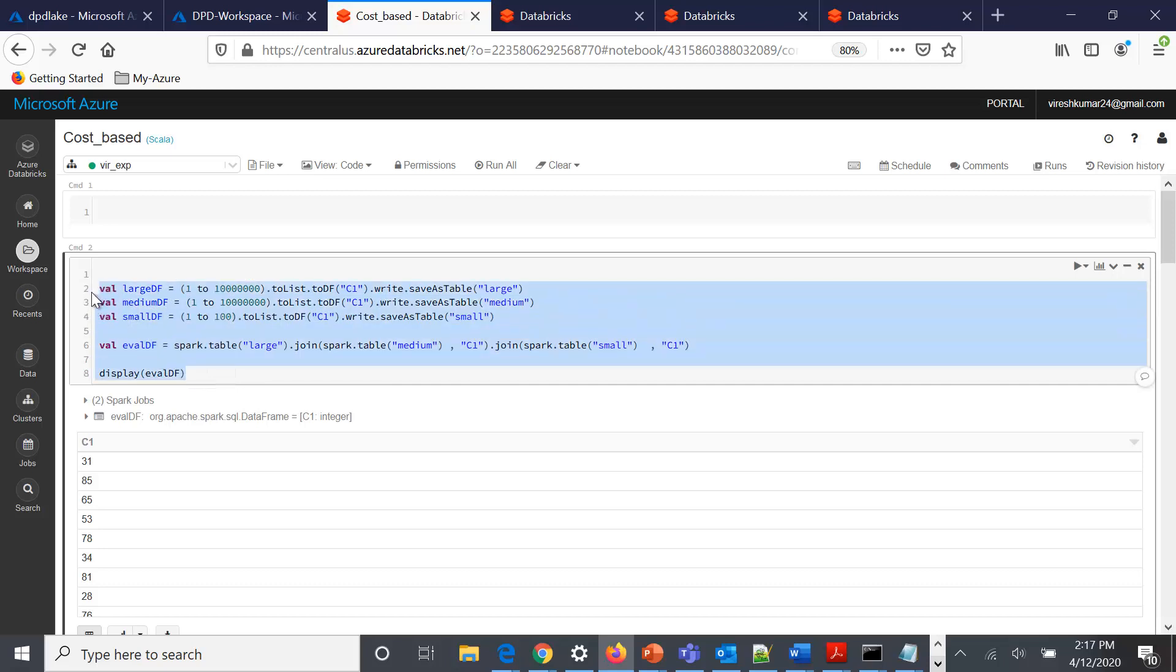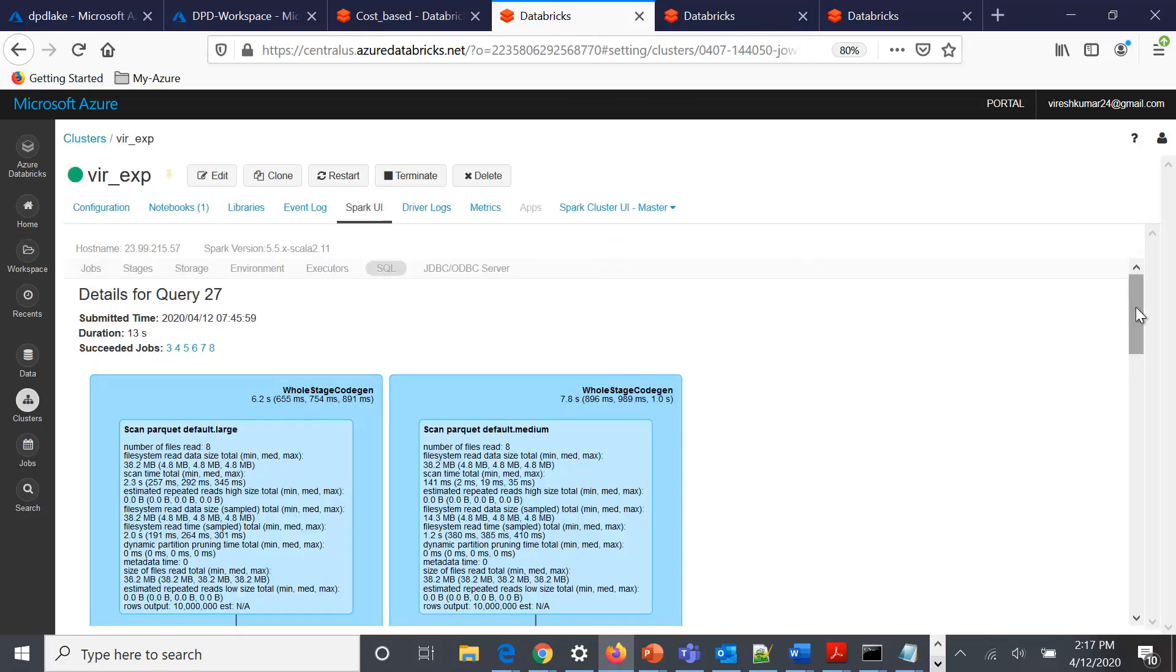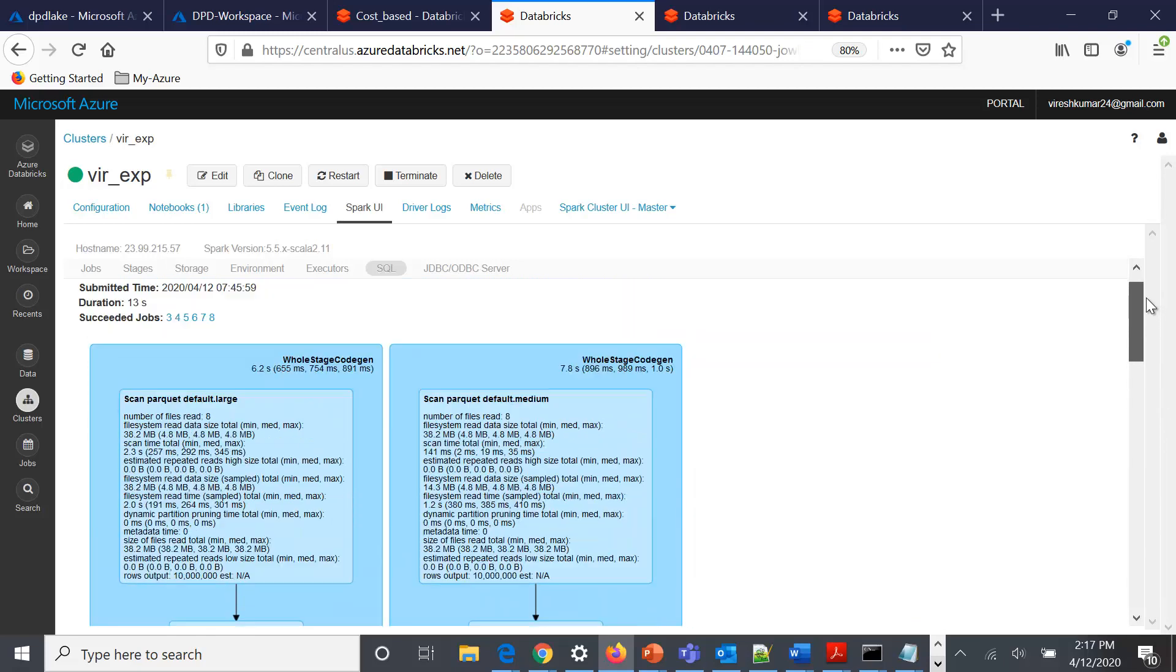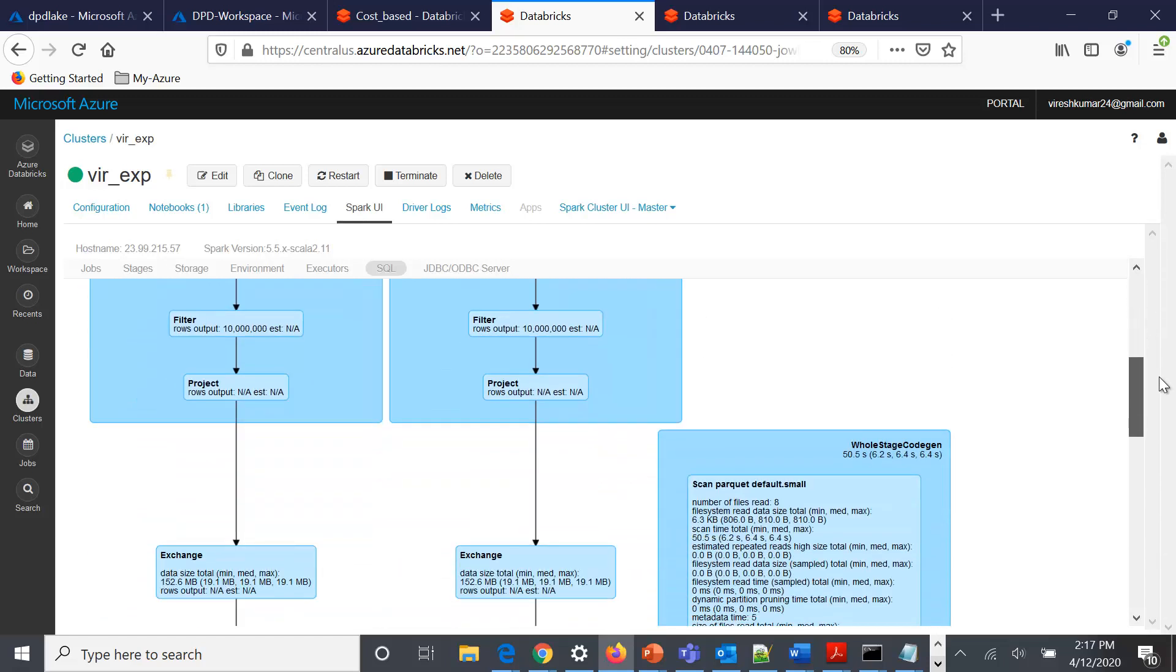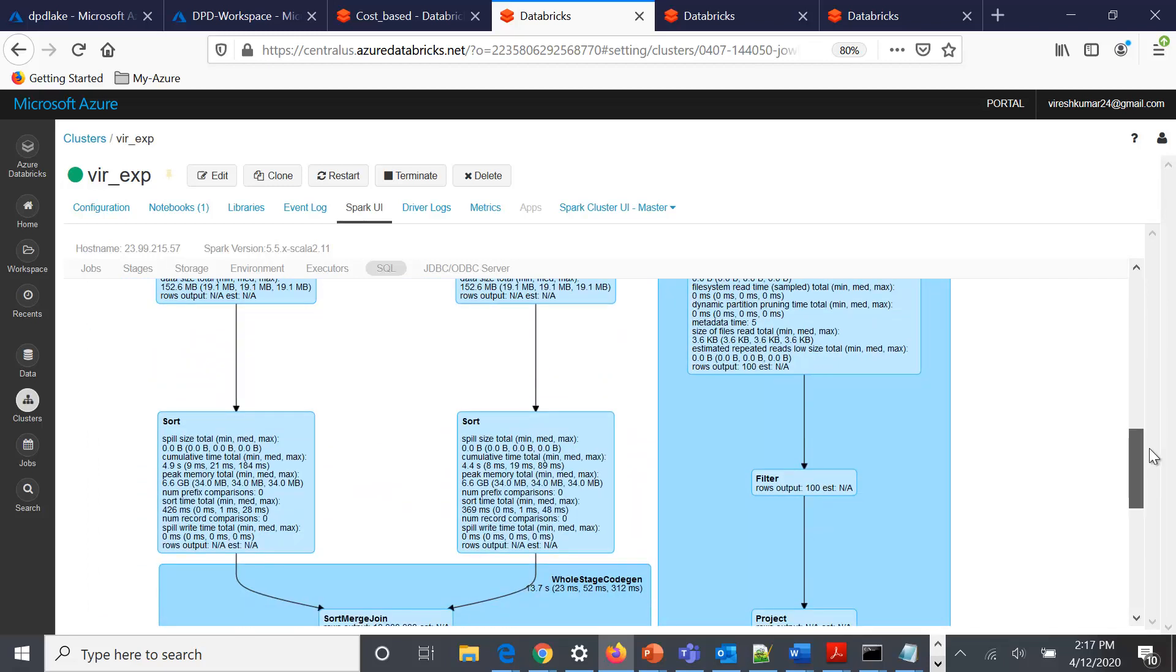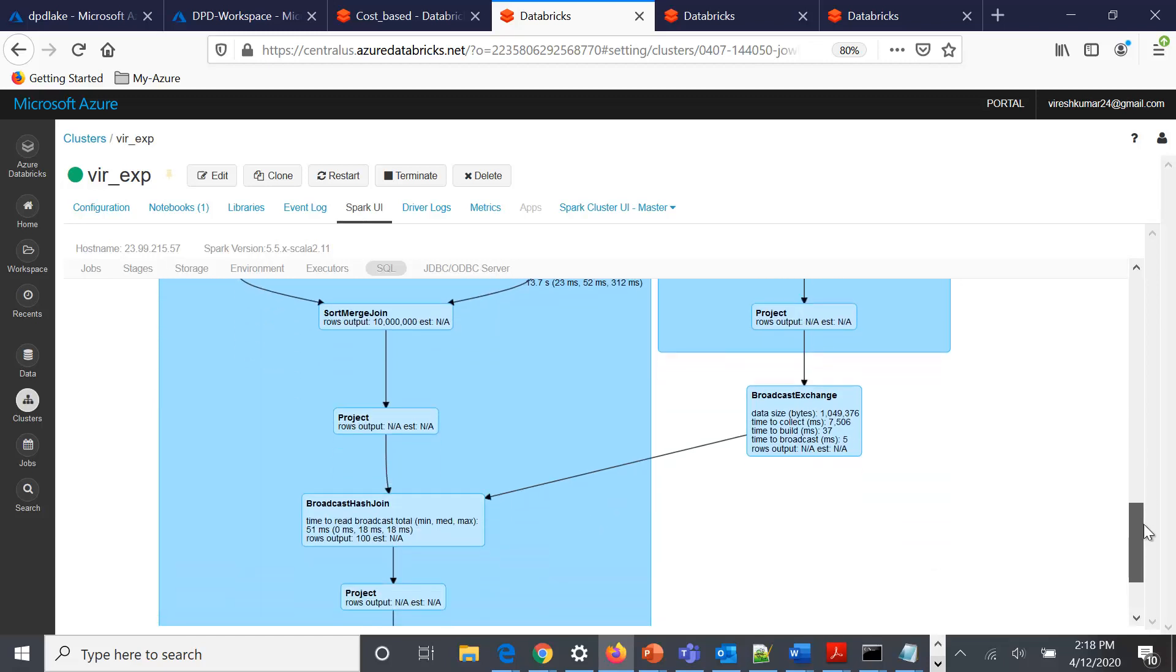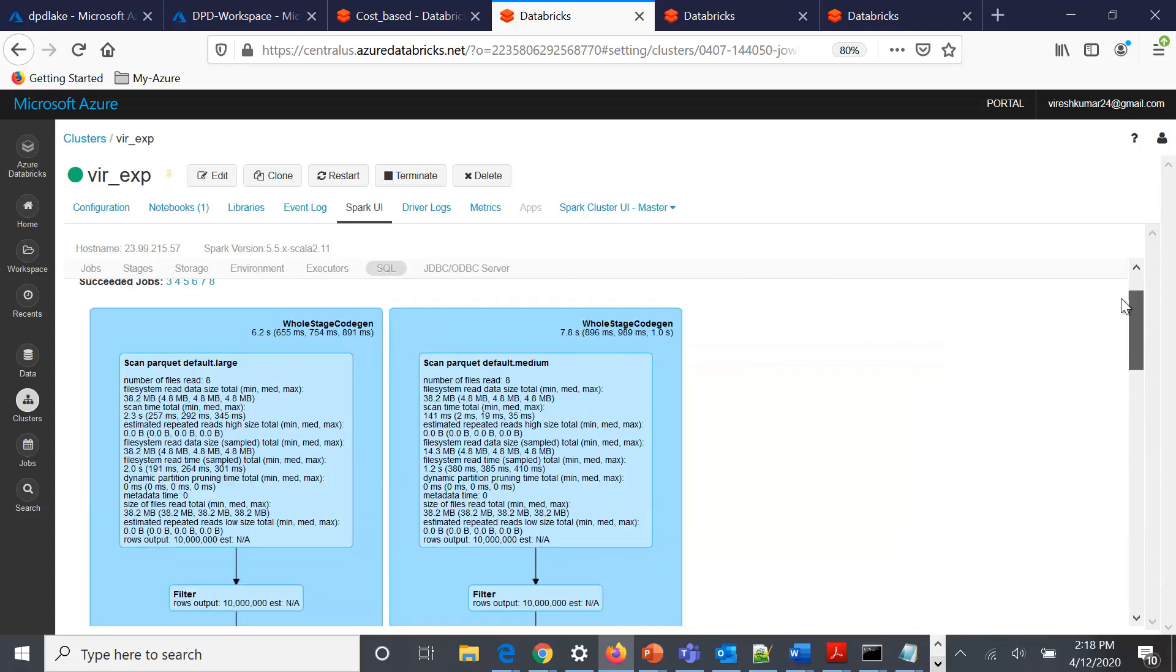If we try to run it without the CBO enabled - by default the cost-based analysis is disabled, it's false - if we run it as is and try to look at the query SQL execution plan in the Spark UI, we'll see that it has taken around 13 seconds for the execution of these joins, these statements that we have passed, and the order is as is what we have passed. No rearrangement of the joins is done, no statistics are calculated. It has taken around 13 seconds for the execution of this sort-merge between the two big tables and then a broadcast join is done with a smaller table. The overall execution of this SQL has taken around 13 seconds.